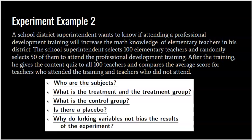Who are the subjects? The 100 elementary teachers. What is the treatment and treatment group? The treatment group is the group that went to the professional development; the control group is the group that didn't. Is there a placebo? No. This is a scenario where I cannot give somebody fake professional development — what would I do, teach them bad math or just have them sit there? This is a great example where you simply can't use a placebo.